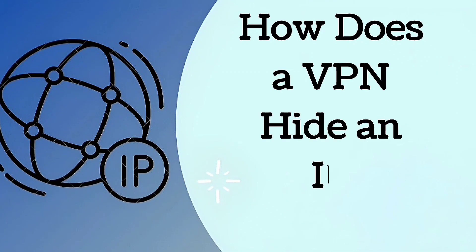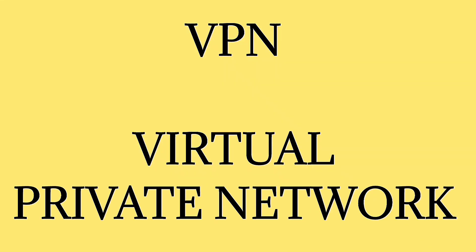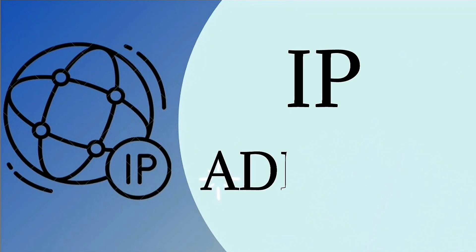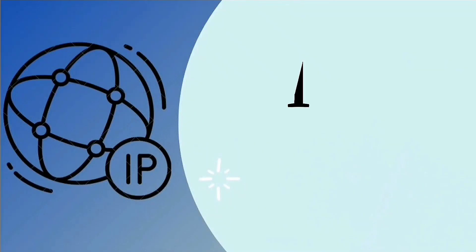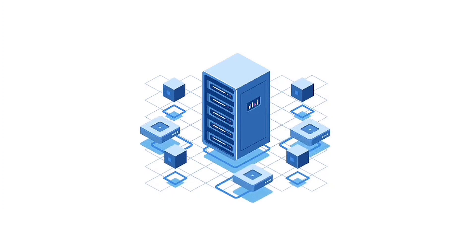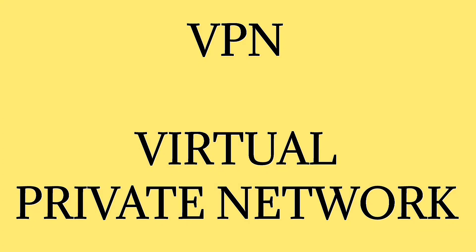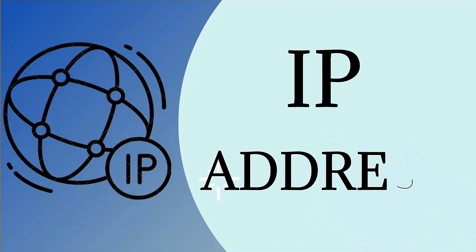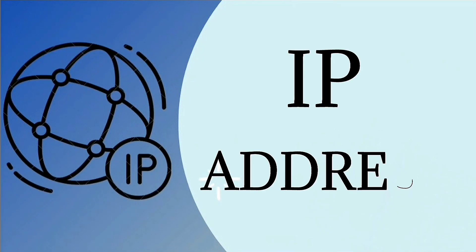How does a VPN hide an IP address? A VPN, or virtual private network, is the best way to hide your IP address. A VPN replaces your actual IP address, making it appear as though you are connecting to the internet from the location of the VPN server rather than your real location. When you disconnect from the VPN, your real IP address will be shared. A VPN hides your IP address to ensure privacy and security.